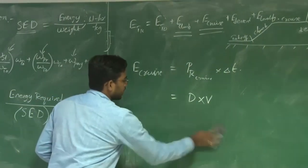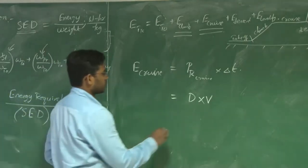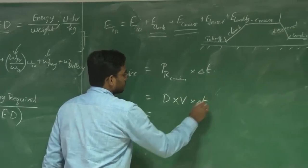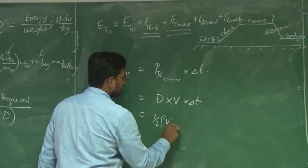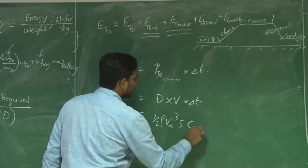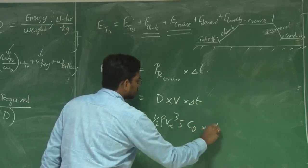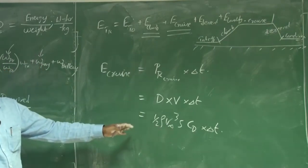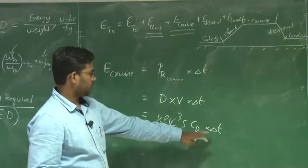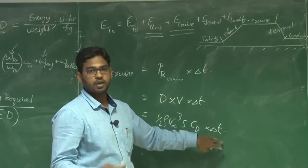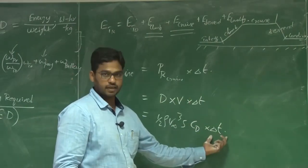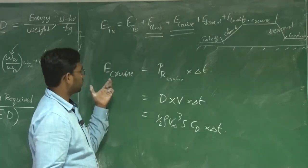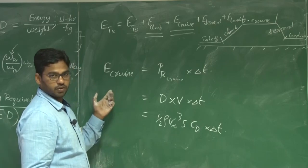Going back to energy for cruise: E_cruise = ½ρV∞³ S CD Δt. Velocity for the cruise mission will be given from the mission requirements, and you need to know CD to figure out the cruise energy.